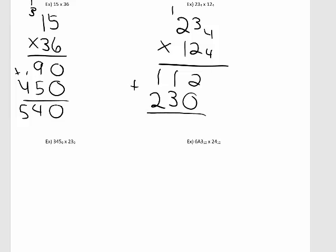So I'm going to add. 2 plus 0 is 2. 1 plus 3, that's 4. How many groups of 4 can I take from 4? That's 1 with a remainder of 0 — put down the 0, carry. 1 plus 1 plus 2, that is 4. How many groups of 4 can I take from 4? Again, that's 1 with a remainder of 0 — write the 0, carry the 1, and there's only a 1. Don't forget the base 4. So my answer when I multiply these two numbers in base 4 is 1002 base 4.